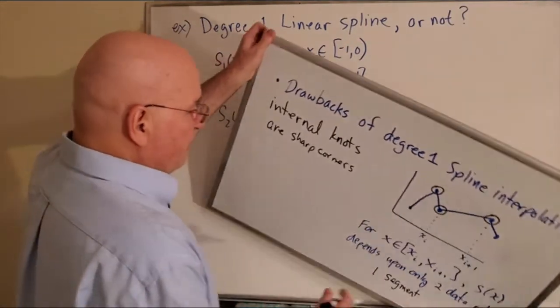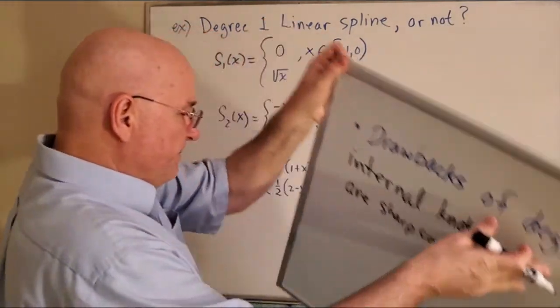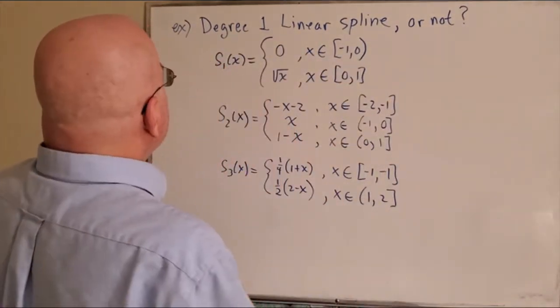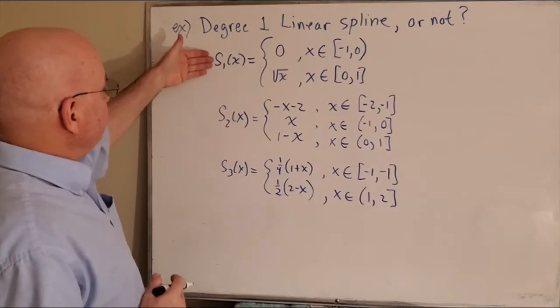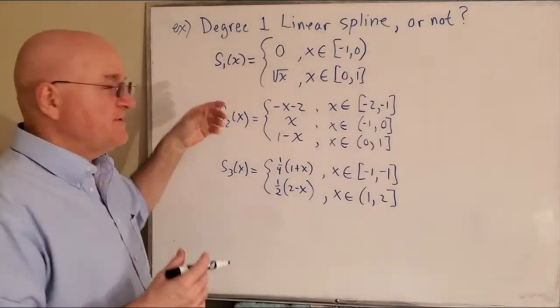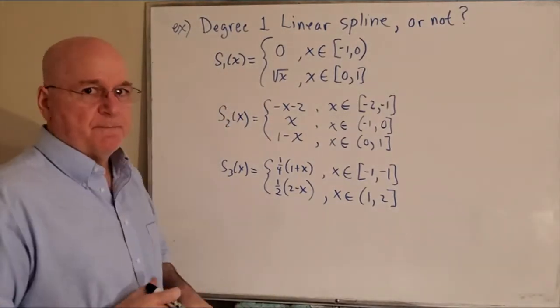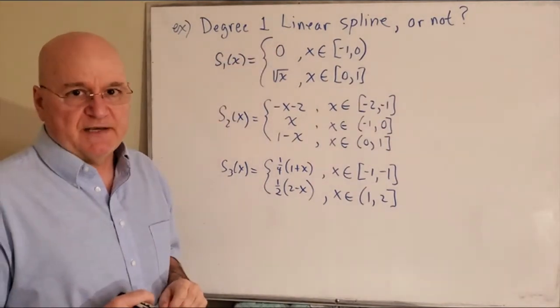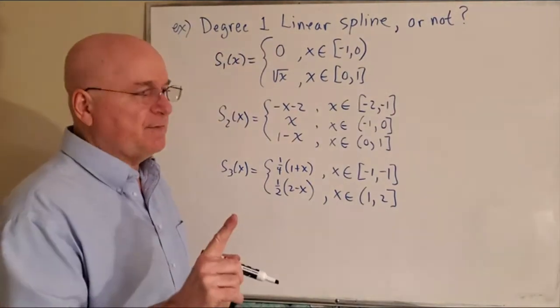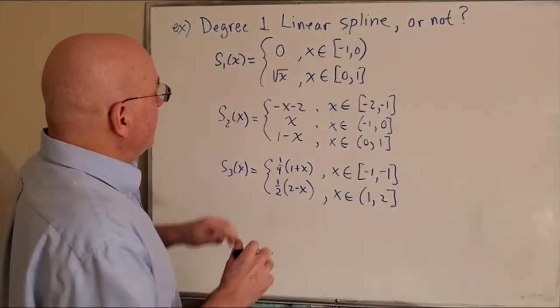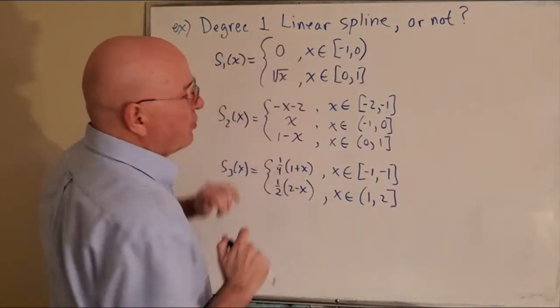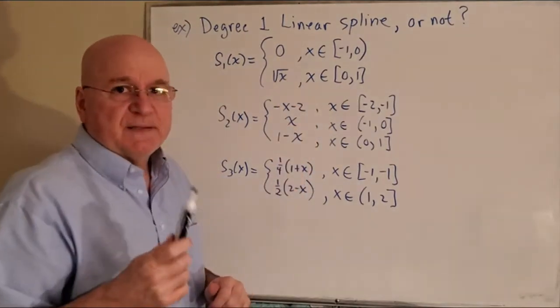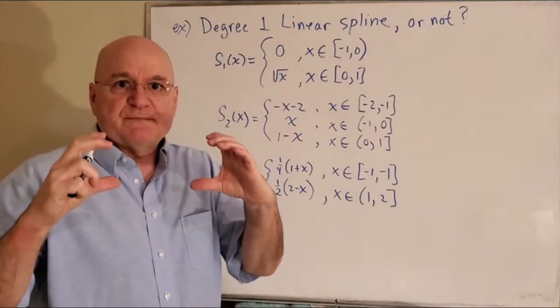Okay, let's look at a couple of examples - three, I guess - and the question is: here's a spline definition perhaps, and here's another one, and here's the third one. I want to know if each one of these is a degree one spline. The first thing I'm going to look at is only the domains. I'm going to ignore the functions for a minute because remember, a spline has to be defined on a closed bounded interval.